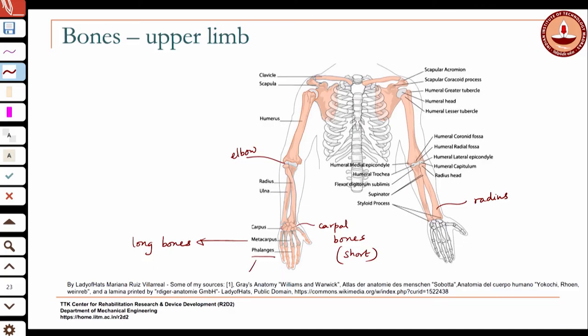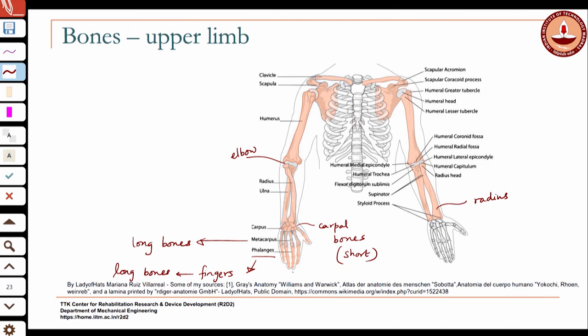The fingers are your phalanges, and these are also long bones. The last one, the most distal phalanges, would be more like a short bone, because they are not longer than they are wide. But the proximal phalanges would be long bones. They are actually called proximal, medial — middle — and distal.